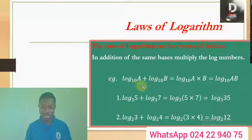The first law: addition of log of the same basis. If I have log base 10 and log base 10, I don't see anything attached behind. When there's addition, you multiply the log numbers. For example, log₃5 plus log₃7 - since the bases are the same, I multiply to get log₃35.